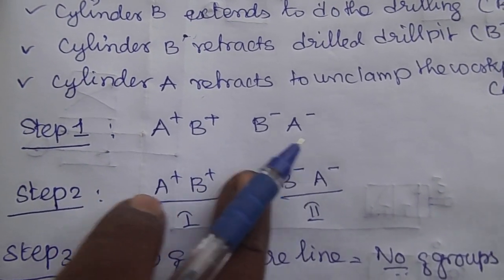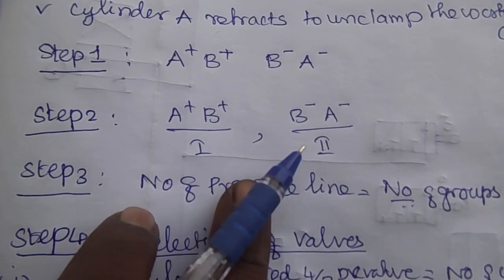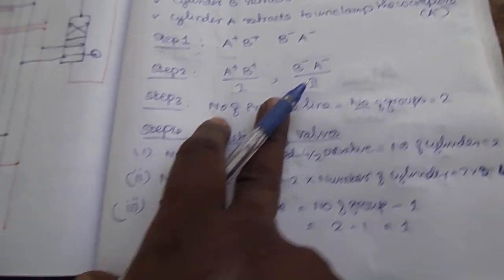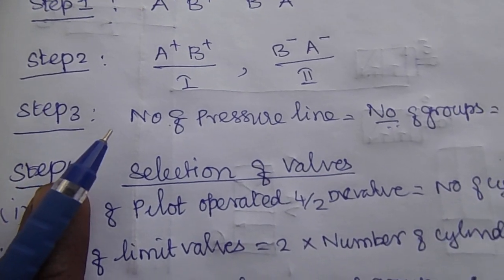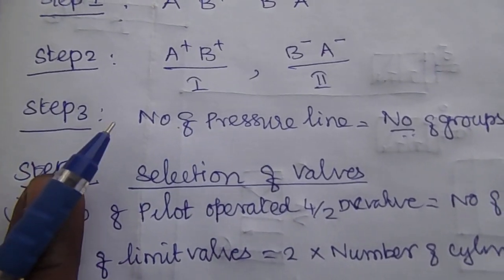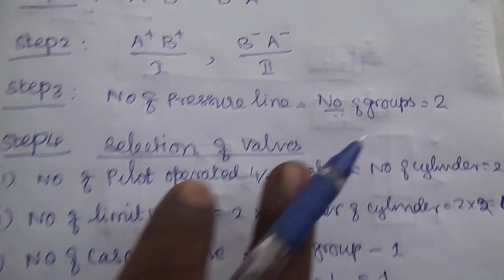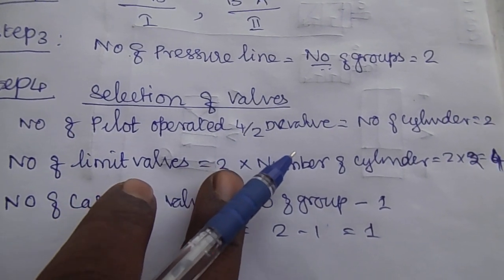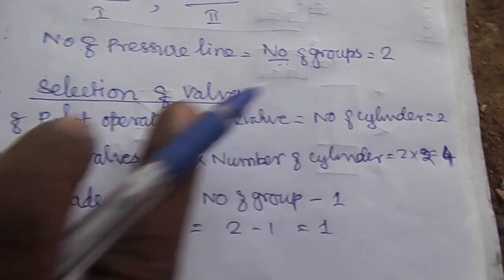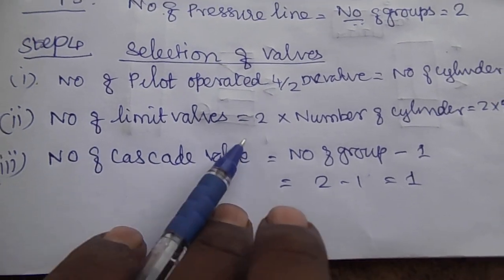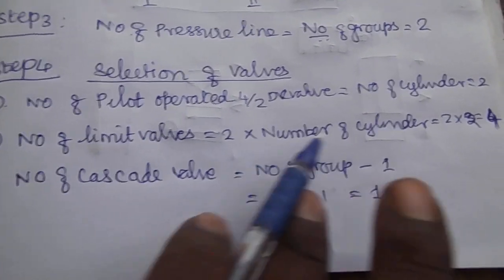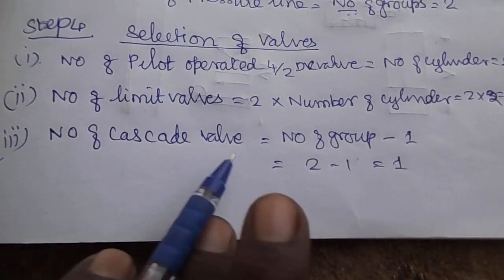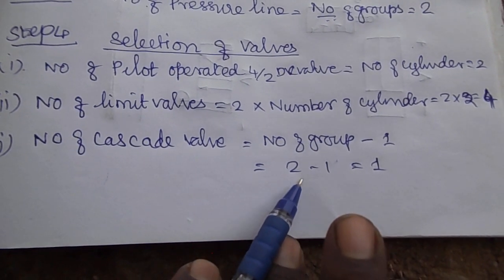So the sequence is: A plus, B plus, B minus, A minus — clamp, drill, undrill, unclamp. Now we divide into groups: Group 1 has A extension and B extension; Group 2 has B retract and A retract. Step 3: Number of pressure lines equals number of groups. Step 4: Number of piloted operator 4x2 valves equals number of cylinders.